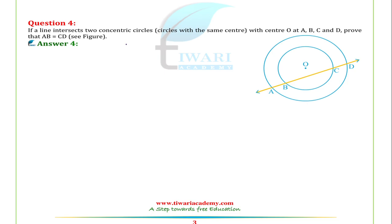This question is: if a line intersects two concentric circles (circles with the same center) with center O at A, B, C and D, prove that AB is equal to CD.